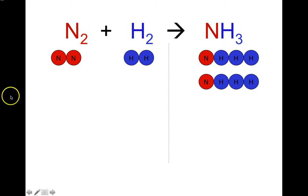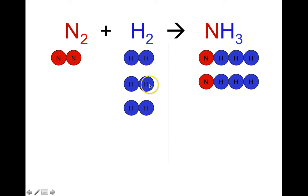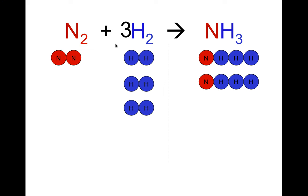This is fixable — I just need more hydrogen. Here's another hydrogen molecule, giving me four hydrogen atoms on the reactant side. Let's bring in another hydrogen molecule. Now it's balanced: six hydrogen atoms on the reactant side and six on the product side, and two nitrogen on each side. I don't write a number in front of N2 because there's just one molecule of nitrogen. But I need a coefficient of 3 in front of H2, and a coefficient of 2 in front of NH3, which is ammonia. Now I have a balanced chemical equation: N2 + 3H2 yields 2NH3. And that concludes this video.